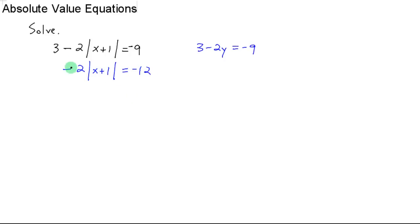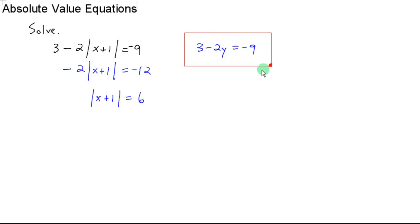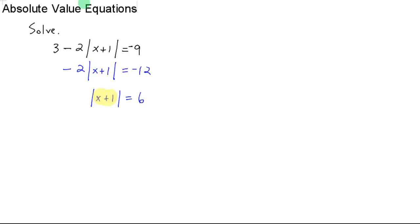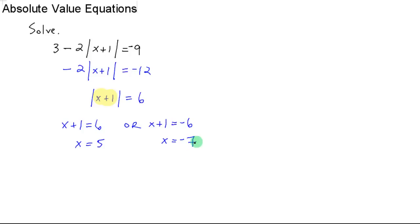Now you need to get rid of the negative 2. Since it's multiplied by the absolute value, you divide both sides by negative 2. When you do that, you get the absolute value by itself, and on the other side you've got positive 6. The only difference here is you have to isolate the absolute value first. What's inside the absolute value could be positive 6 or negative 6. So x plus 1 could be 6, or x plus 1 could be negative 6. Then you can solve each of those equations by getting x by itself, since there's no absolute value remaining.